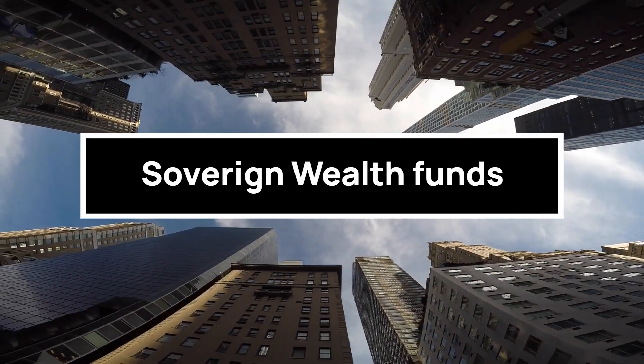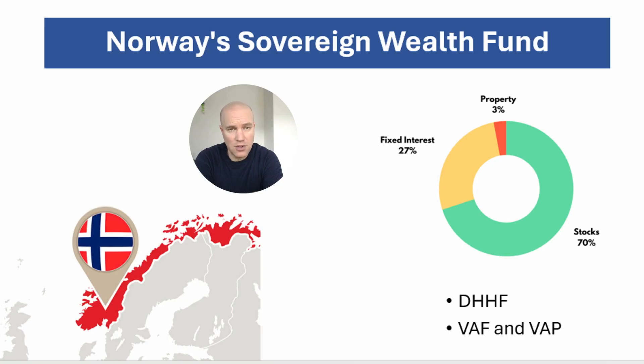Now it's time to look at how some of the biggest funds in the world invest their money. A sovereign wealth fund is like a big savings account — but instead of being for a person or family, it's for a whole country. A government puts money into this fund, usually from selling natural resources like oil or gas, and invests it to make more money — typically to pay for things like schools, hospitals, or to save for the future. These are highly diversified portfolios across a number of asset classes, regions, and sectors. The Pension Fund Global, also known as the Norwegian Oil Fund, is the largest sovereign wealth fund in the world, with over $1.4 trillion in assets. It's invested in three things: stocks, fixed interest, and property — easy to recreate with simple ETFs.